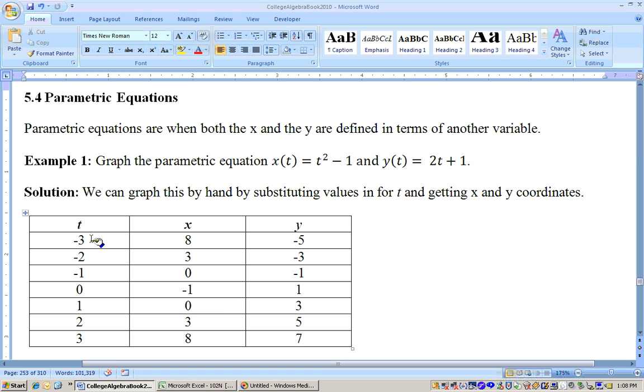For example, if I substitute negative 3 into the x(t) function, negative 3 squared is 9, 9 minus 1 is 8. When I substitute negative 3 into the y(t) function, 2 times negative 3 is negative 6, negative 6 plus 1 is negative 5, so it would have this coordinate 8, negative 5. Do the same with negative 2 and so on, and you end up with these coordinates.